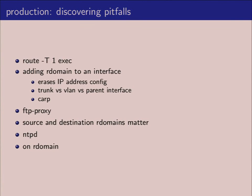You have your 10 gigabit link into the switch, all your VLANs coming in, and each VLAN is simply marked on a different routing domain. Then you just process it as normal. CARP is a little bit of a special case, because CARP is half of an interface by design, so CARP needs to be in the same routing domain as its parent. But that's the only restriction.